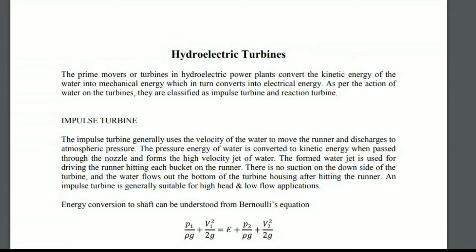The turbine in a hydro-electric power plant converts the kinetic energy of the water into mechanical energy, which in turn converts into electrical energy. So the mechanical energy converts into electrical energy. The generator movement is mechanical energy, and that movement is created from the force of water. The movement is created by a component or equipment — that is called a turbine.